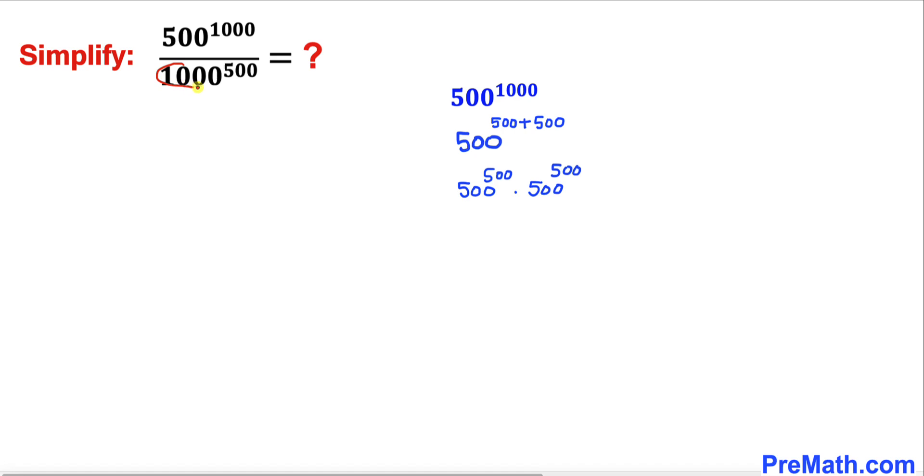Now let's focus on this denominator of this rational expression. Here I have copied it down and now let's focus on this base 1000. This could be written as 2 times 500, isn't it?